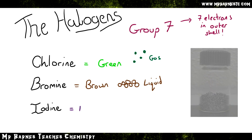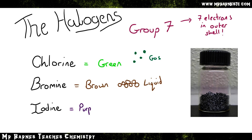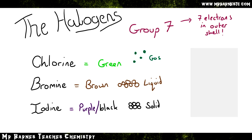Finally, we have iodine. Iodine can look either purple or black. Be careful here because some exam papers don't like you using the word purple. When you heat iodine it turns into a purple vapour, but the solid itself is black, so in the exam say black or dark grey.